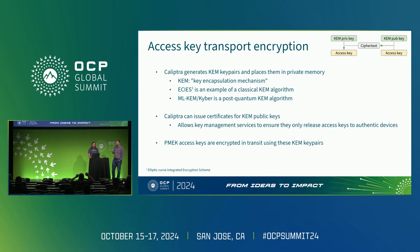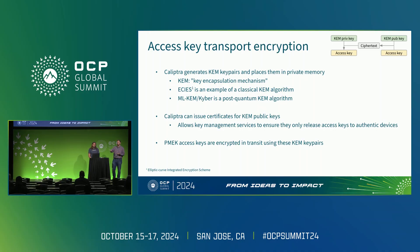We want very strong certainty that when access keys are sent into the drive for PMEK decryption, there is no intermediate layer that could remember, hold, or log them. So we want transport encryption: Calyptra will generate KEM key pairs. KEM stands for Key Encapsulation Mechanism — the new way to talk about asymmetric encryption. ECIES is one of these building on elliptic curves. ML-KEM, or Kyber, is a post-quantum version that Calyptra 2.1 will support. We'll issue certificates for these KEM public keys so a validation authority can ensure it's only releasing an access key to a legitimate drive. These KEMs are in-memory only, so if you yank the drive, the KEM goes away and any stashed ciphertext is useless.